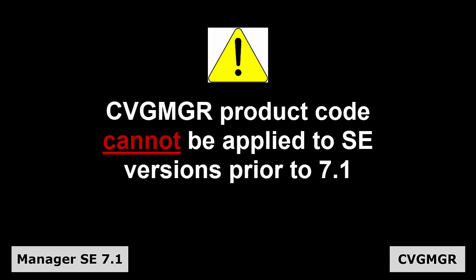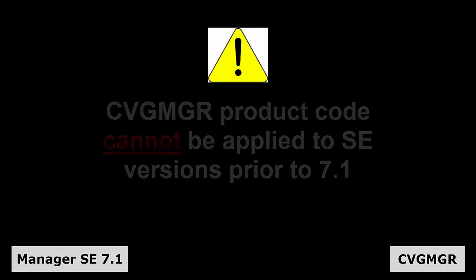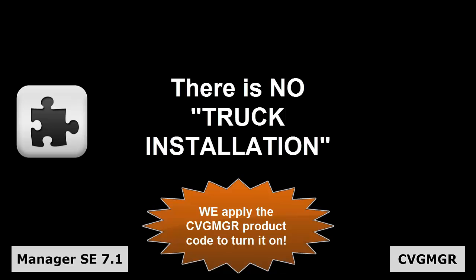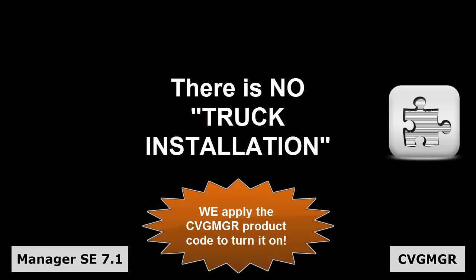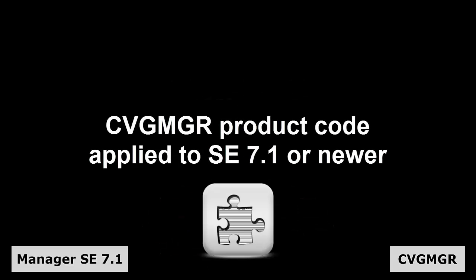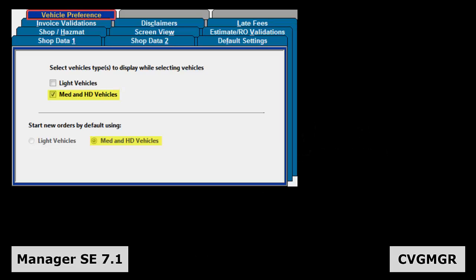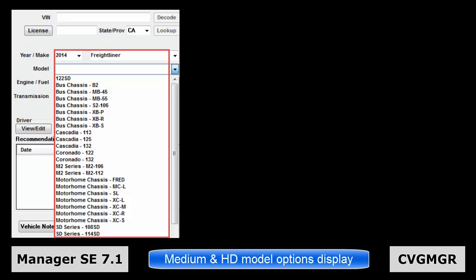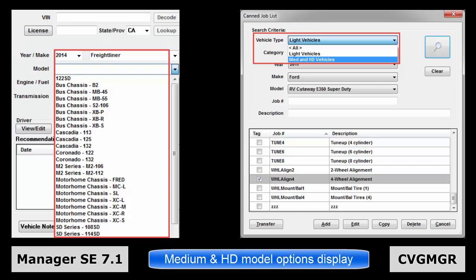The CVG-MGR option cannot be applied to SE versions prior to 7.1. There is no truck installation. Once this subscription change is handled administratively when your order is processed, you are then able to implement truck configuration decisions on your 7.1 or newer version of SE. When the CVG-MGR product code is applied to an SE 7.1 subscription, it behaves like a catalog or a plug-in as new options that reflect Class 4 through 8 medium and heavy duty truck models become visible for selection.